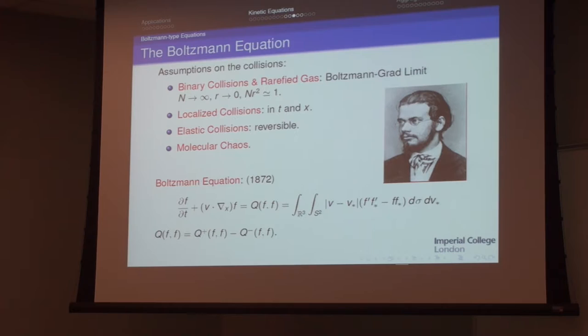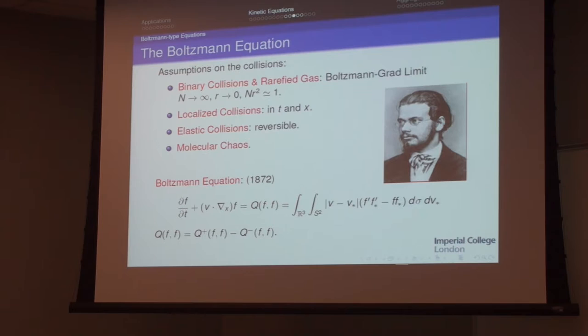An audience member asks about the molecular chaos assumption in relation to chaos theory. The molecular chaos assumption enters exactly in the product f·f*, which approximates the probability that two particles will collide — one with velocity v and the other with velocity v*. Boltzmann assumed that the joint probability of two particles is the product of the probability of each particle individually, meaning there is no memory in the system. For inelastic collisions, one would need corrections to the molecular chaos assumption, and people have worked on that.